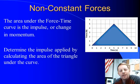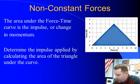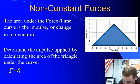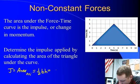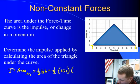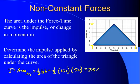What happens when you have a non-constant force? If you can make a graph of force versus time, the area under the force-time curve is the impulse or the change in momentum. For example, with a force versus time graph in the shape of a triangle, the impulse equals the area of that triangle: one half times base times height. The base goes from 0 to 10 seconds (base = 10 s) and the height goes from 0 to 5 newtons (height = 5 N). One half times 10 times 5 gives us 25 newton seconds.